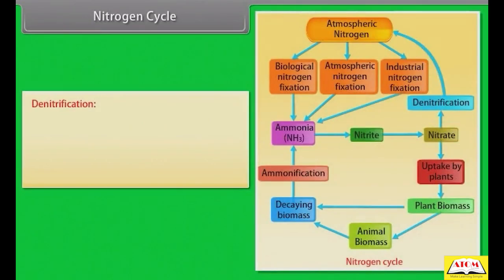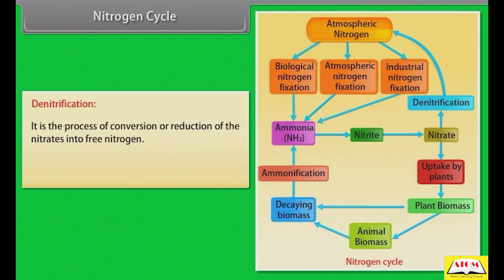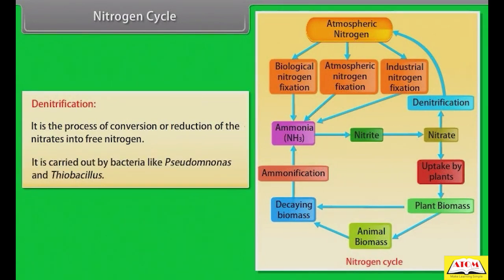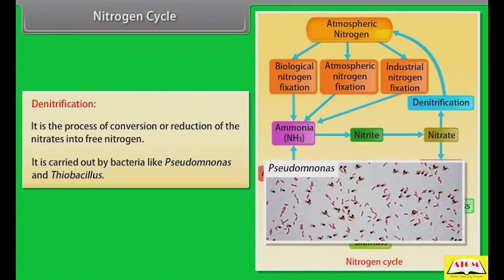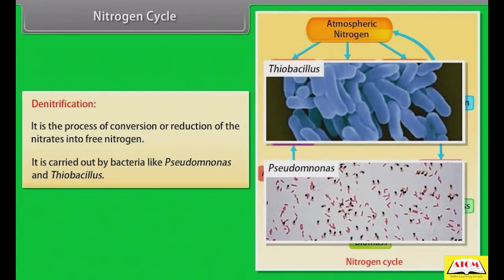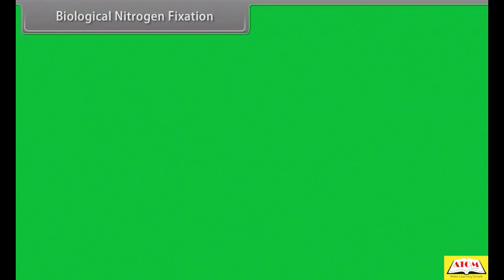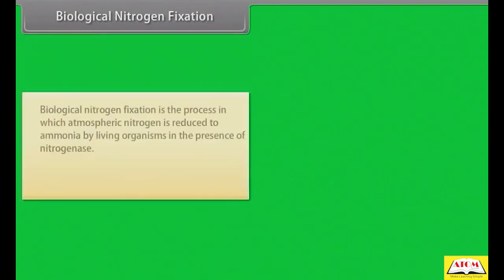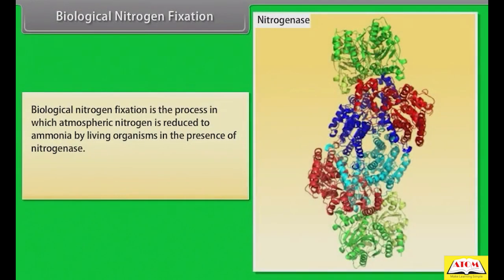Denitrification: it is the process of reduction of nitrates into free nitrogen. It is carried out by bacteria like Pseudomonas and Thiobacillus. Biological nitrogen fixation: this is the process in which atmospheric nitrogen is reduced to ammonia by living organisms in the presence of nitrogenase.